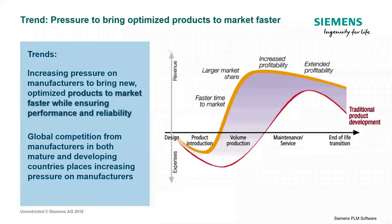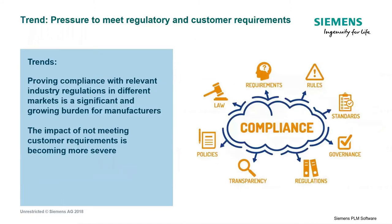Looking at the product lifecycle graph, there is pressure on manufacturers to bring their products faster to market while keeping reliability and performance high. Along with needing to optimize their products, companies also face pressure to meet compliance requirements — the rules, standards, governance, and regulations that exist in their industries. This is a very critical factor as well.